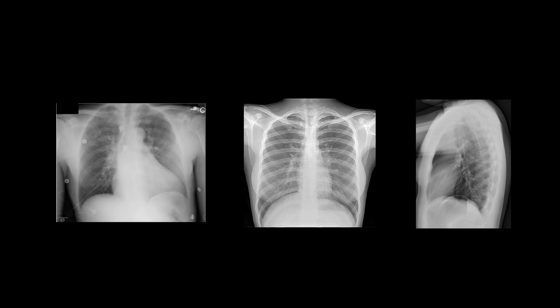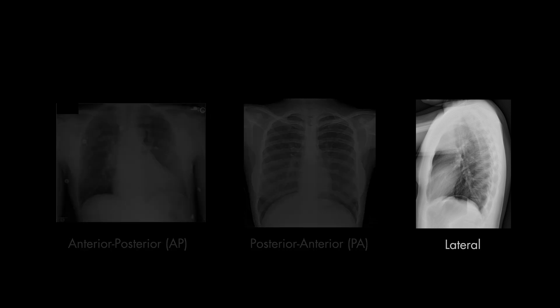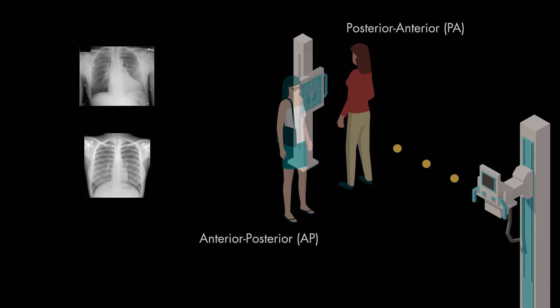There are three types of chest x-ray films: anterior-posterior, posterior-anterior, and lateral x-rays. Lateral x-rays are easy to tell apart from AP and PA x-rays — this one is obviously shot from the side, while the others are shot perpendicular to the patient, either facing or looking away from the x-ray machine.